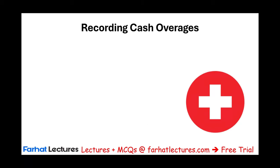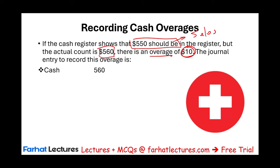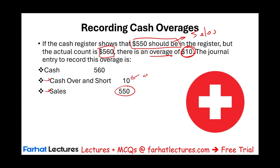For recording cash overages: if the cash register shows $550 in sales but the actual count is $560, there's an overage of $10 — meaning we likely shortchanged a customer by $10 without either party noticing. The journal entry is: debit Cash $560, credit Sales $550, and credit Cash Over and Short $10, which is recorded as other revenue.